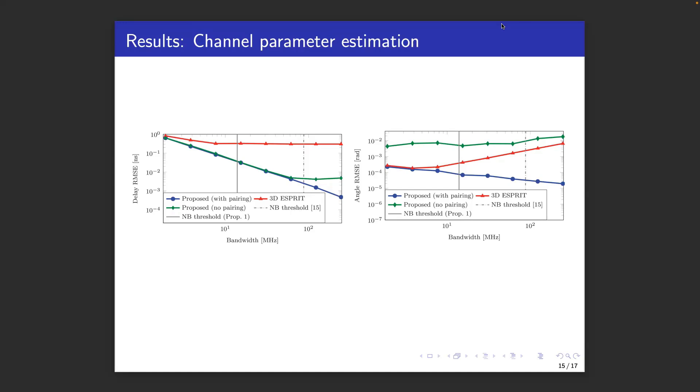In terms of angle estimation, the 3D Esprit is severely affected by the wideband effect. The proposed method without pairing leads to poor results due to the path reordering. When we apply the k-means clustering, again much better performance can be attained. The vertical lines in both figures represent the thresholds where we transition from the narrowband to the wideband regime.